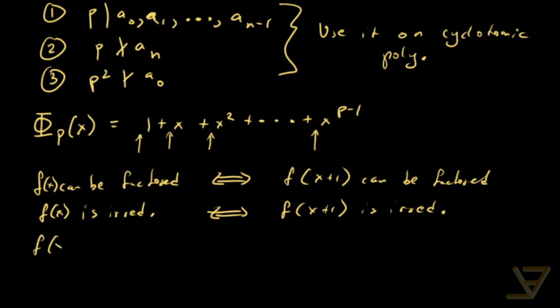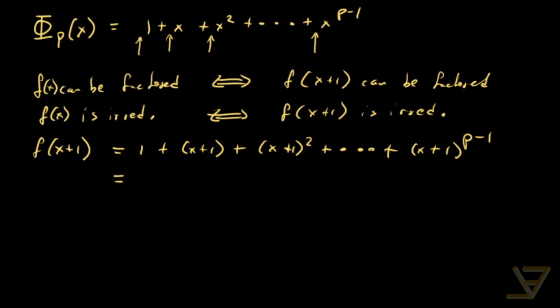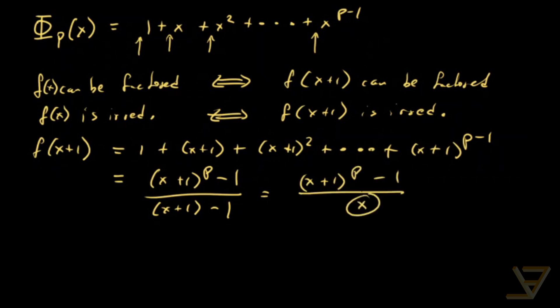So let's work with f(x+1). Let's determine what that is. It's 1 plus (x+1) plus (x+1) squared plus all the way through to (x+1)^(p-1). And this is a geometric series. So as long as we're not dividing by zero, this equals ((x+1)^p - 1) over ((x+1) - 1), which equals ((x+1)^p - 1) over x. And we'll take care of the x equals zero case in just a moment.